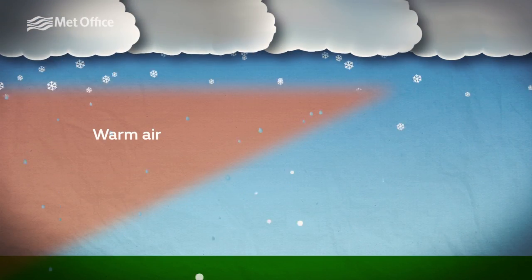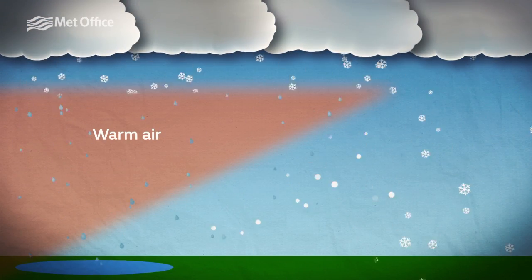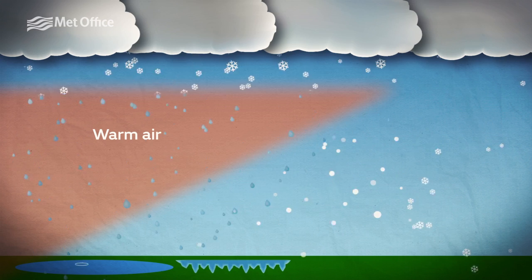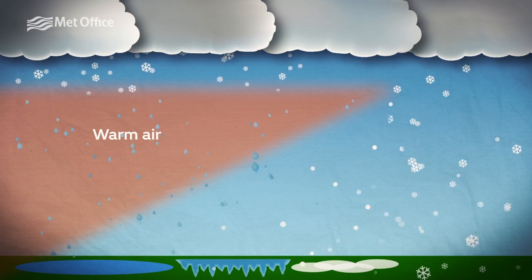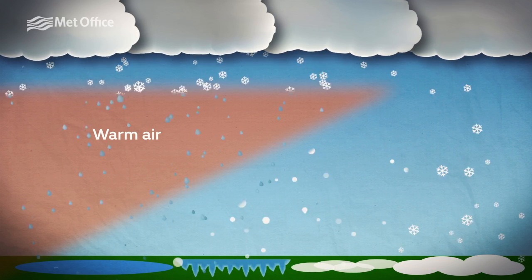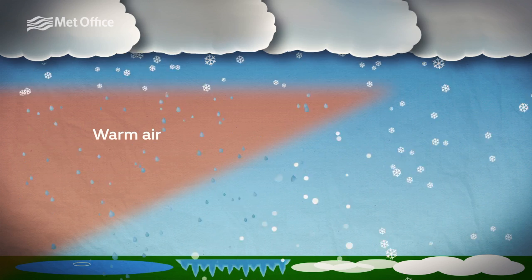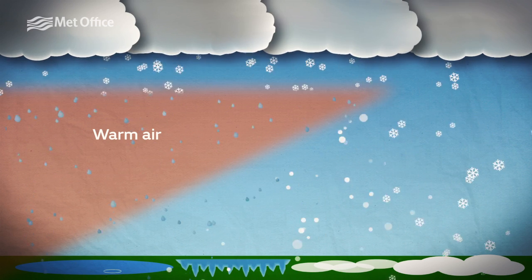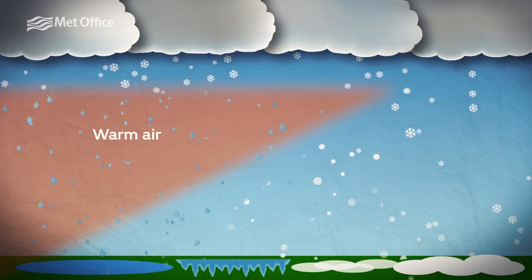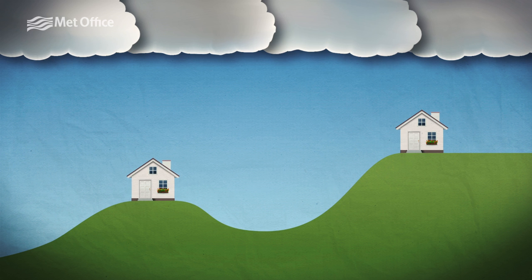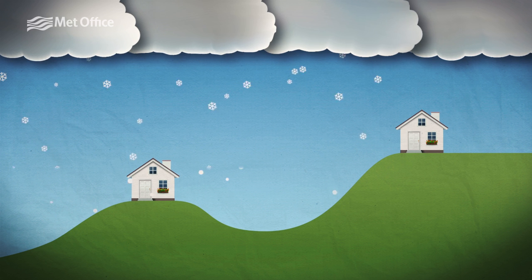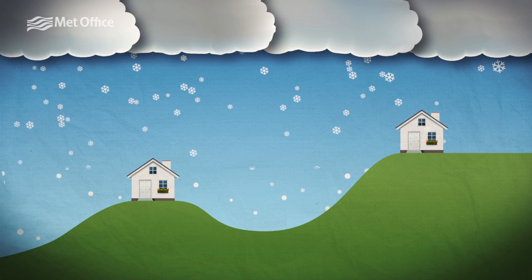As snow falls it can be changed by its surroundings. This image shows how snow can be altered as it falls to give rain, freezing rain or sleet. As you can see from the diagram, the difference in height between the two hills means they get different types of precipitation at their location.